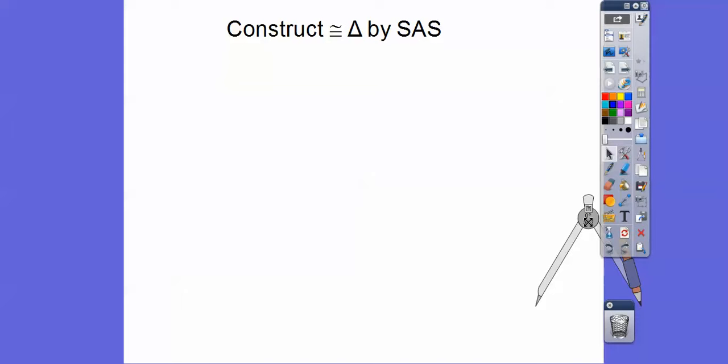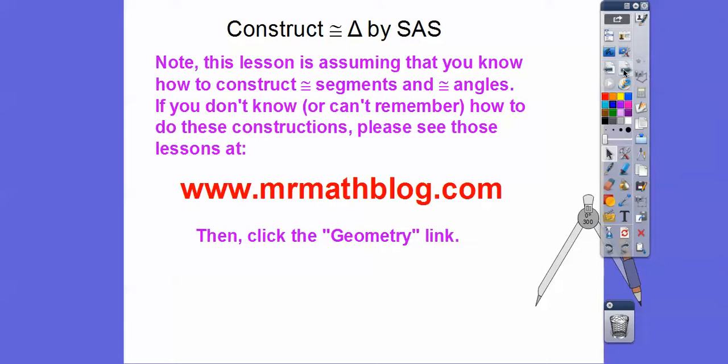In this lesson, we're doing a construction with a straight edge and compass here, congruent triangles by the side angle side method. This lesson is assuming that you know how to construct congruent segments and congruent angles. And if you don't know how to do that, or you just can't remember how to do those constructions,